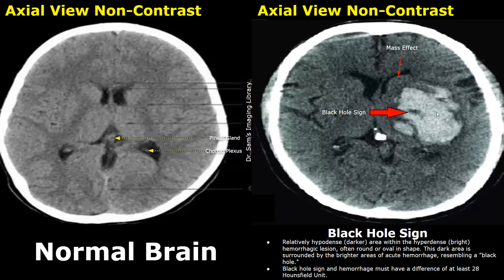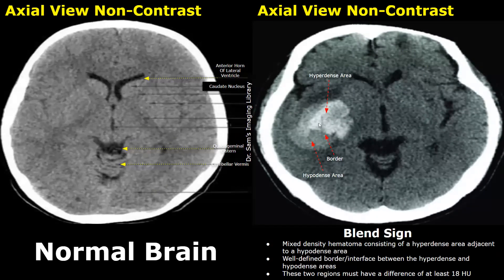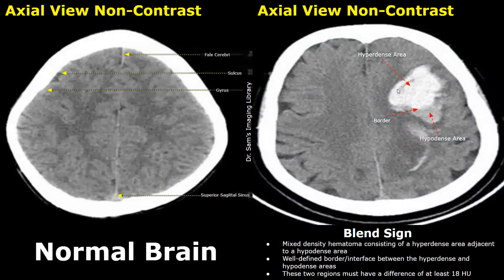A blend sign can also appear in some hemorrhages. It is a mixed density hematoma consisting of a hyperdense area right next to a hypodense area, with a well-defined border or interface between them. This type of appearance is called the blend sign, and the two regions must have a difference of at least 18 Hounsfield units. This is another case of intracerebral hemorrhage showing the blend sign — a hyperdense area is right next to a hypodense area with a distinct boundary between them.